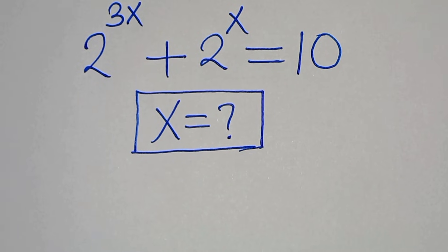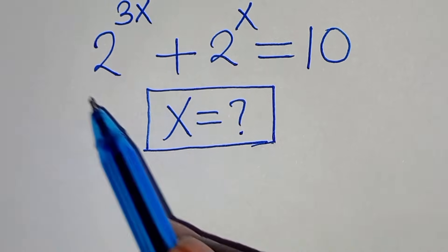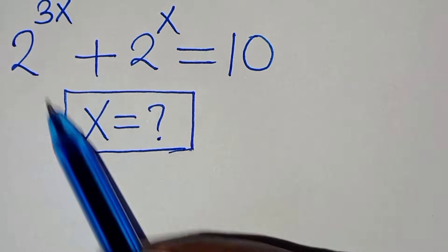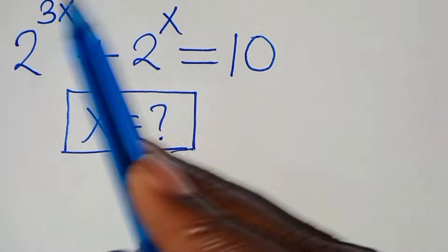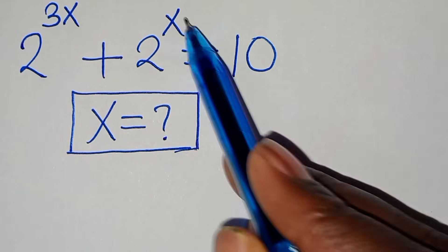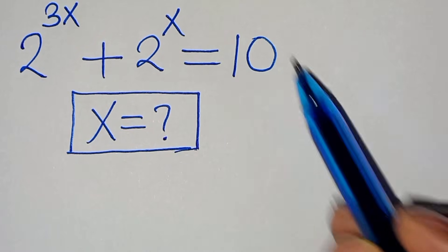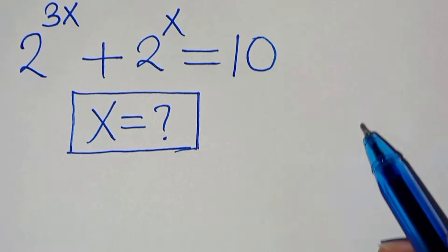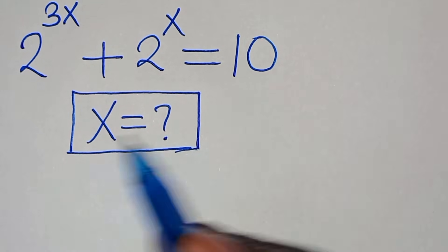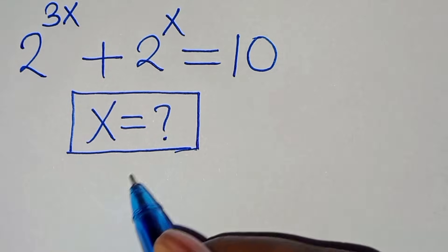Everyone, you are welcome to solve this nice exponential equation: 2 to the power of 3x plus 2 to the power of x is equal to 10. What is the value of x, or what are the values of x?